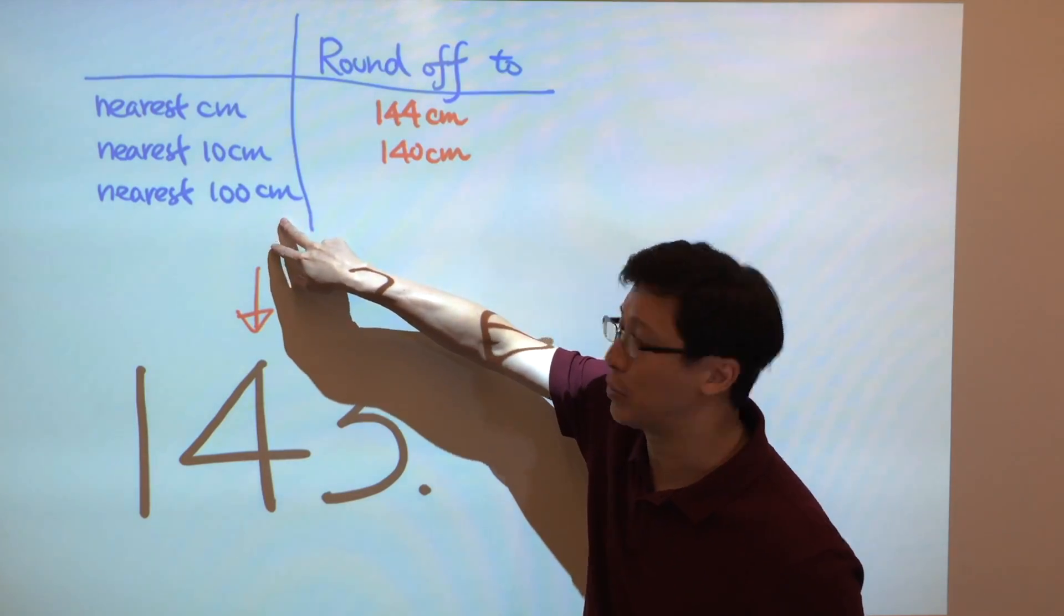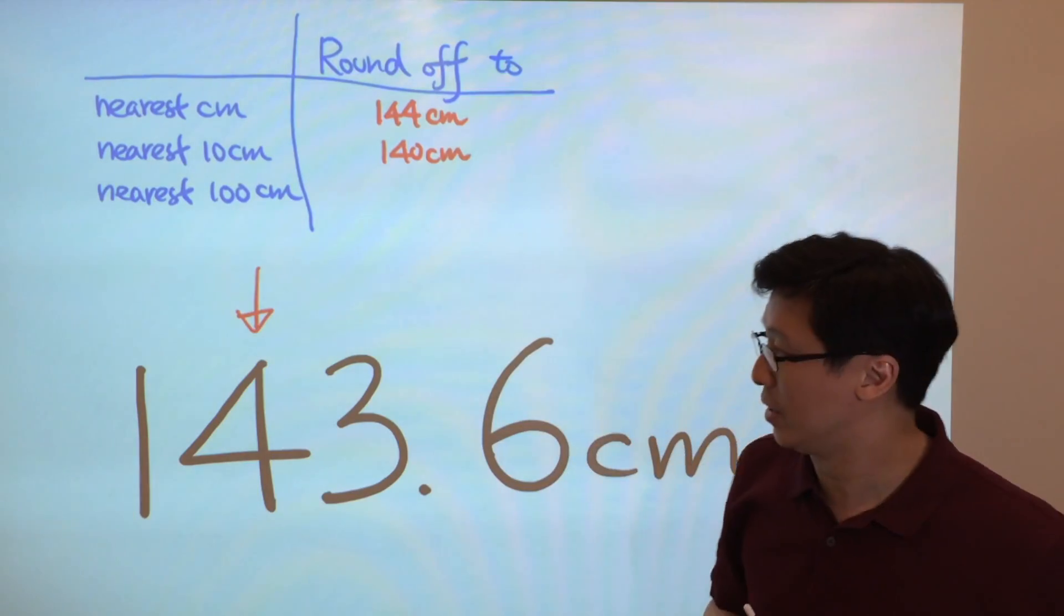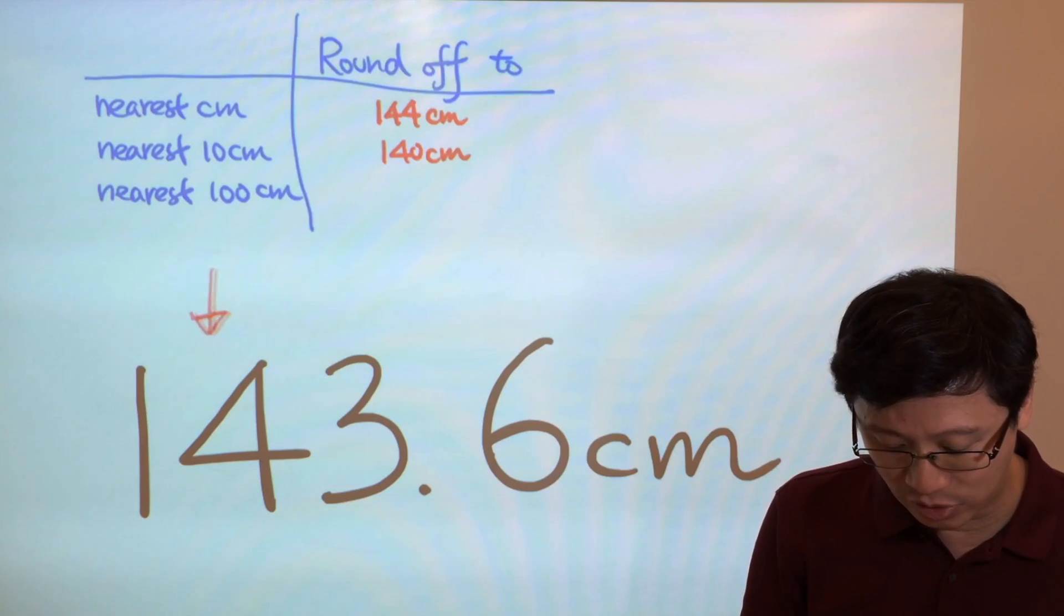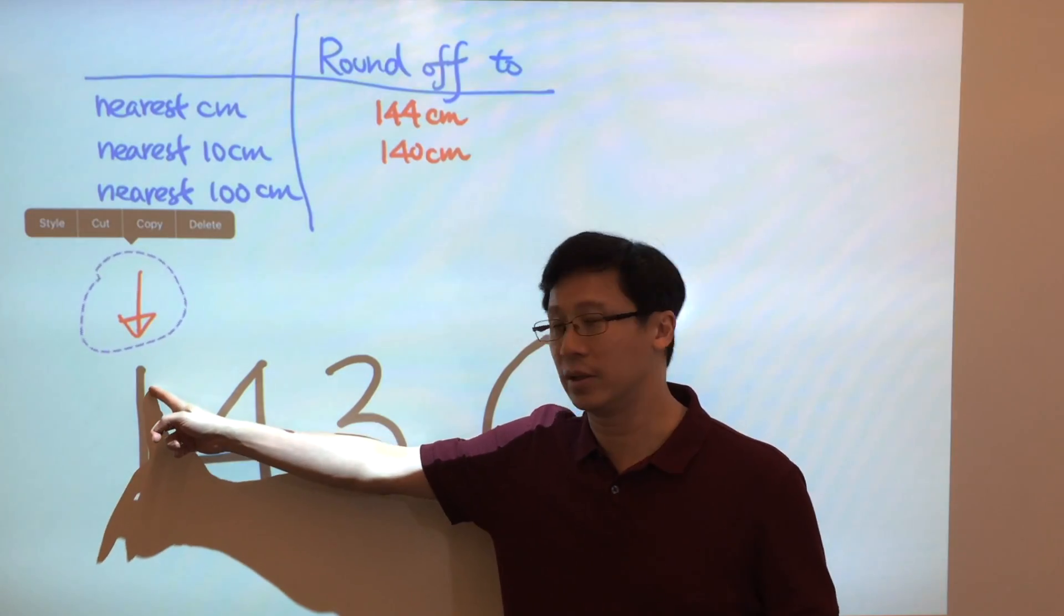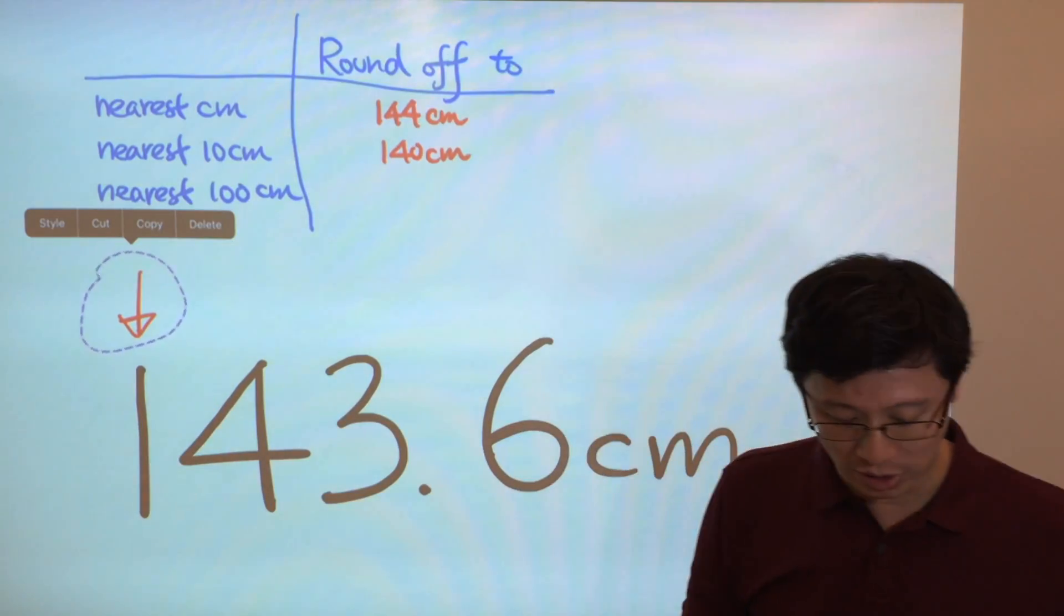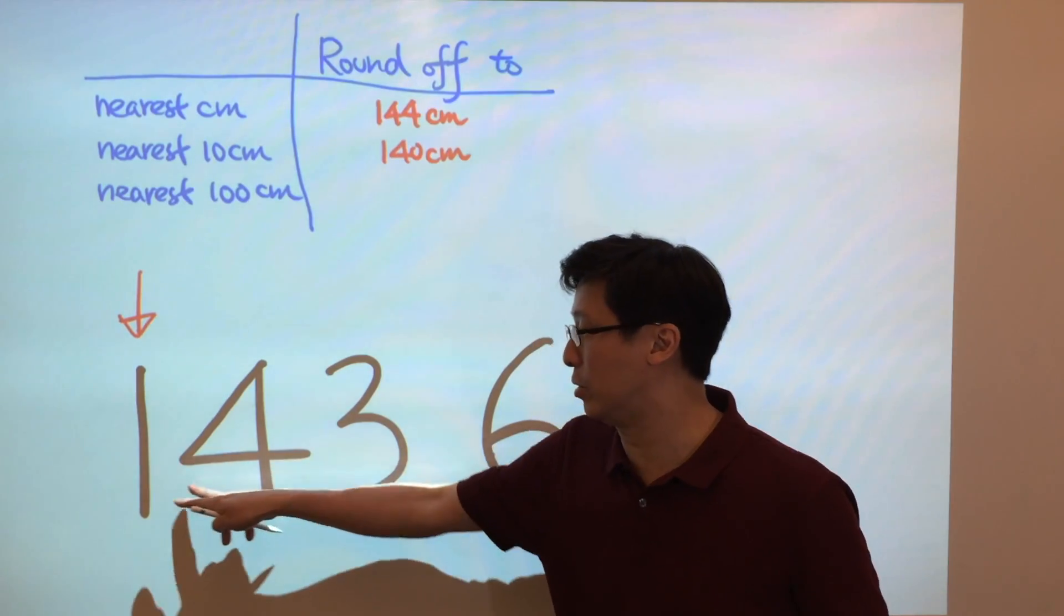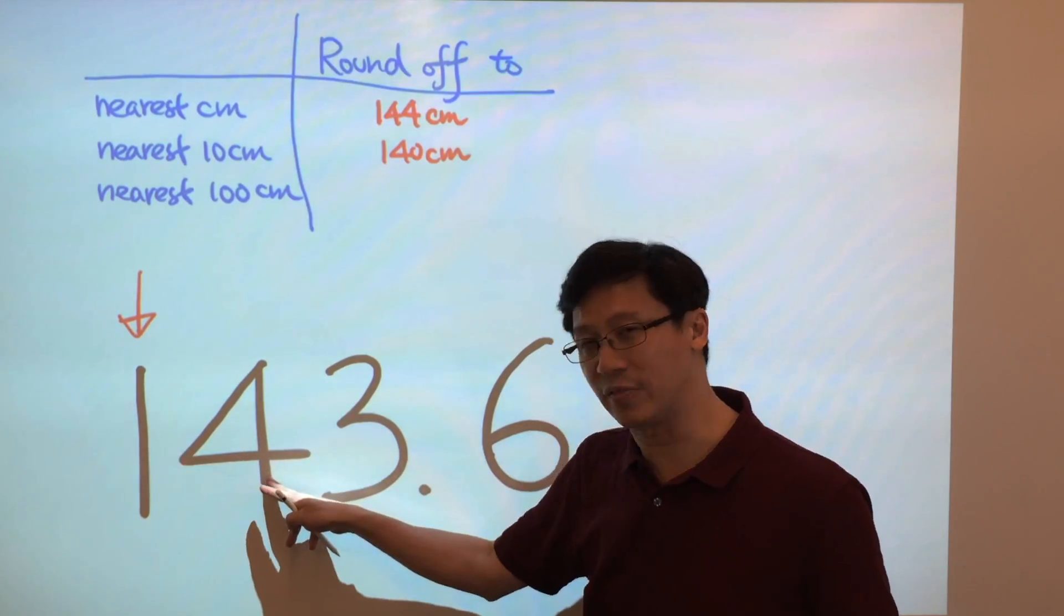What about the last one? Correct to the nearest 100 cm. That means we have to count up to the 100th place. 100. This position. And check the number just right to the number 1. This is 4.